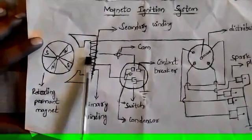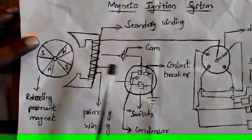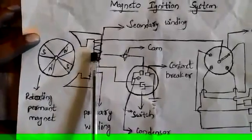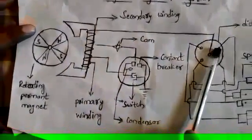One end of the primary winding is connected to the earth, and another end is connected to the contact breaker. One end of the secondary winding is connected to the contact breaker, and another end is connected to the distributor.